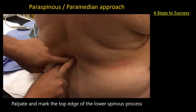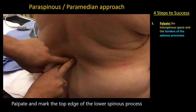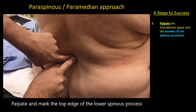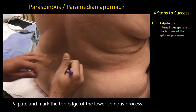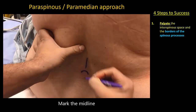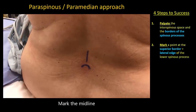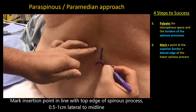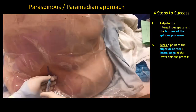There are four simple steps to a successful paraspinous approach, illustrated here in a video of a junior resident performing it for his first time under my instruction. First, palpate the desired interspinous space, but more importantly, establish the superior border of the lower spinous process. Second, mark the needle insertion point at the superior edge of the lower spinous process and adjacent to its lateral edge.